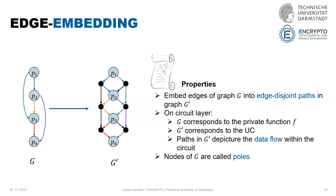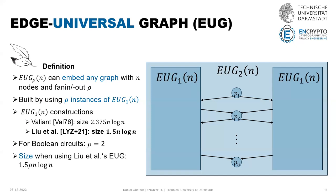The reason for edge-disjoint paths is that if we observe these two graphs on a circuit layer, G corresponds to the function we want to evaluate and G prime corresponds to the universal circuit. The paths in the universal circuit are the data flow from the original circuit. That's why these paths must be edge-disjoint — there is real data flowing, and if two independent sources share an edge the whole result is not correct anymore.